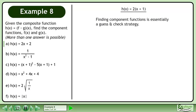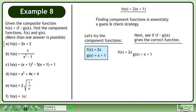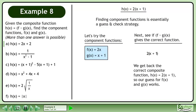Finding component functions is essentially a guess and check strategy. Let's try component functions f and g. Plug g into f to see if f of g gives the correct function. We get back the correct composite function h equals 2 times x plus 1, so our guess for f and g works.